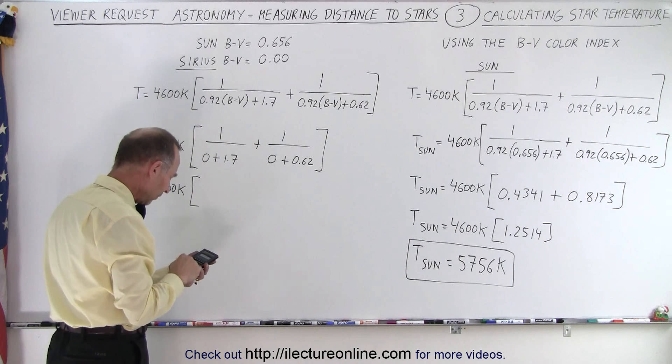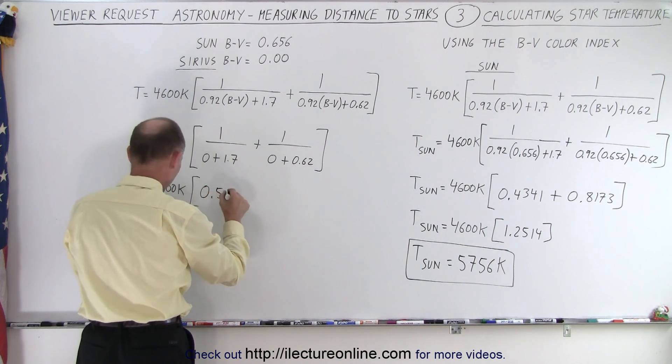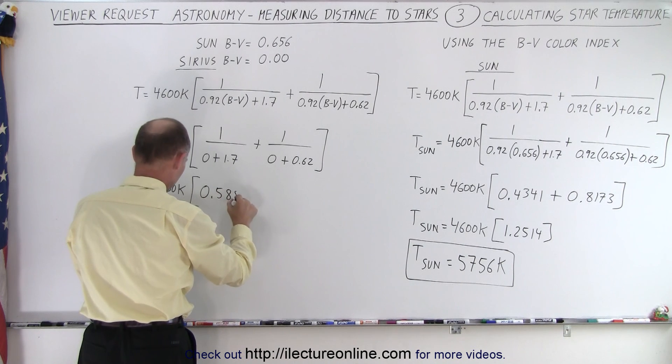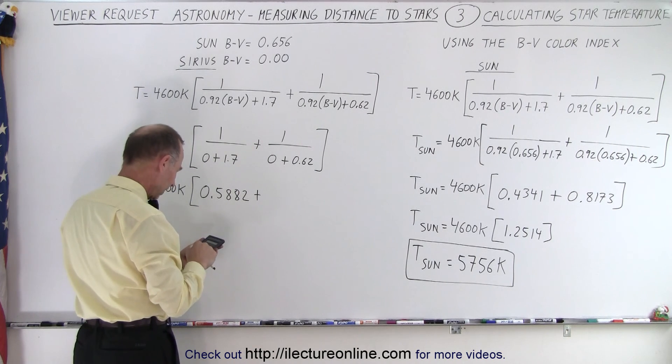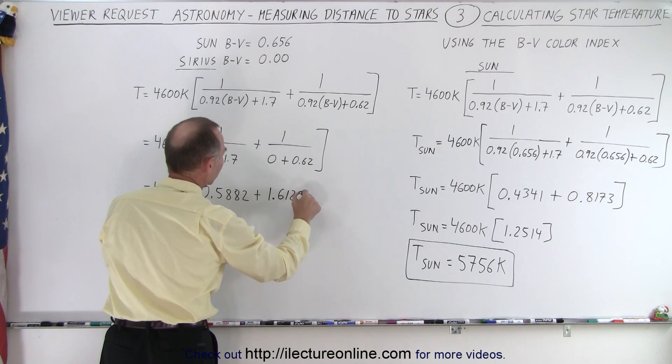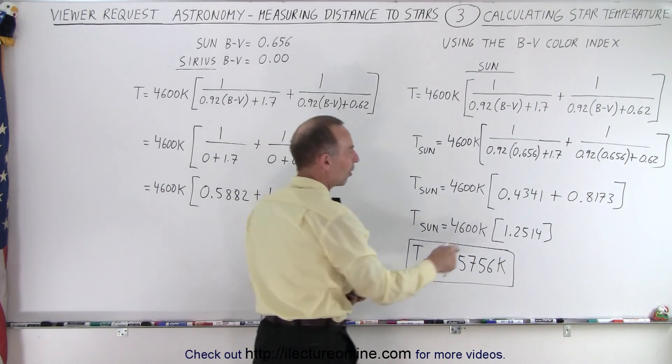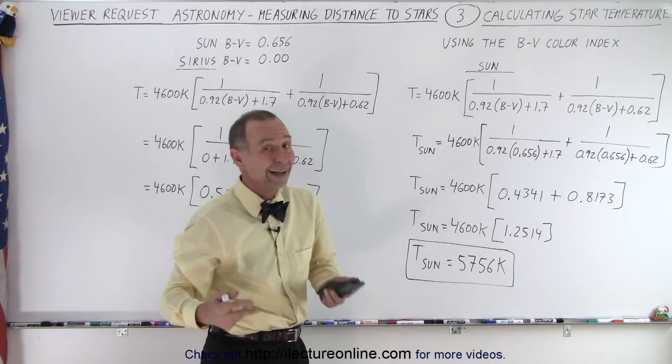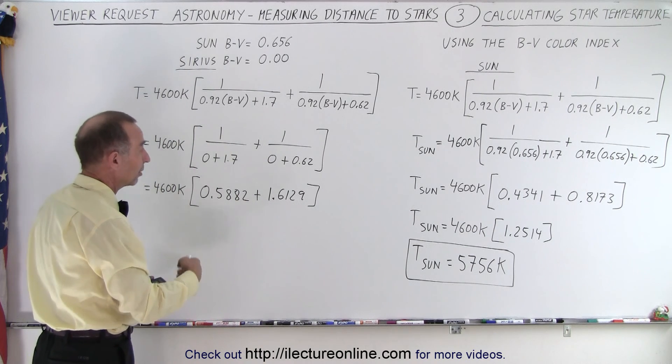So 1 divided by 1.7 equals 0.5882, we'll use four decimal places, plus 1 divided by 0.62 equals 1.6129. Now let's compare what we have over here and notice both of these numbers for Sirius are bigger than the two numbers we got for the Sun, which means higher temperature, because after all, it's an A class star rather than a G class star.